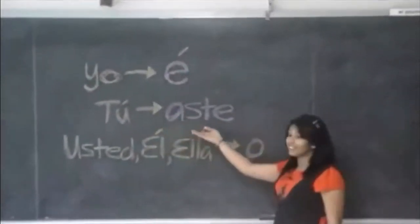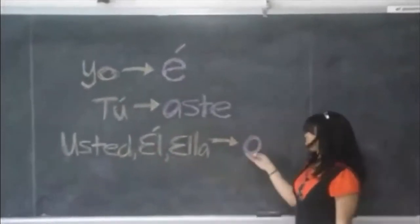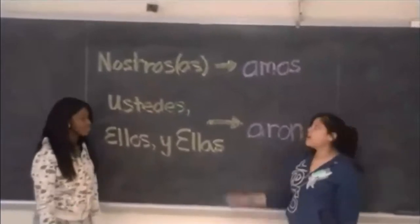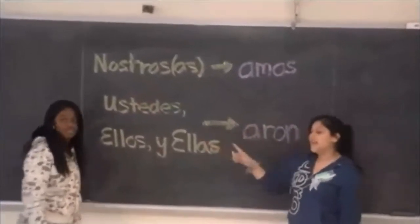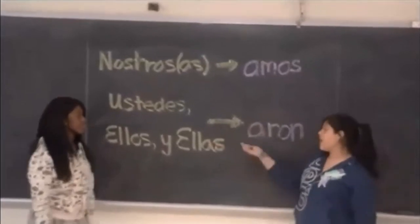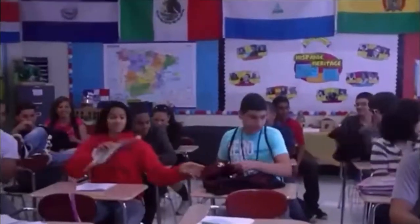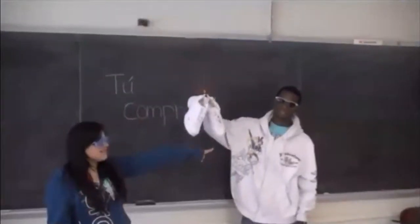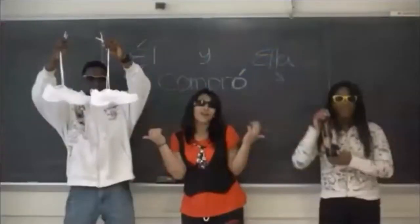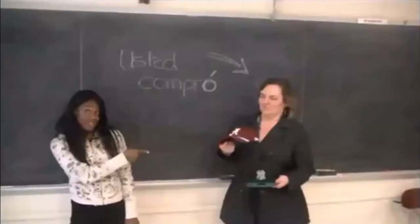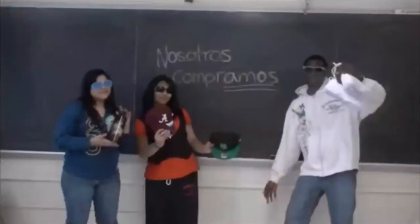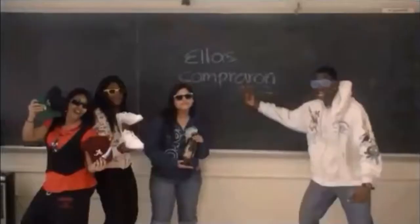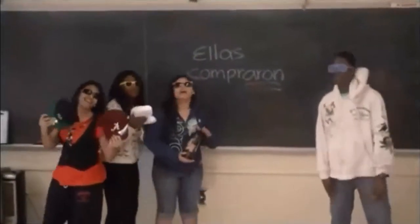The pronoun tú gets the ending -aste. Él or ella gets the O with an accent. Nosotros — it never wants to change, like stem-changing verbs, nosotros always stays the same. Don't forget about ustedes, ellos y ellas — they all get -aron. Compré, compré, compré. Yo compré. Tú compraste. Ella compró, usted compró. Nosotras compramos. Ustedes compraron. Ellos compraron.